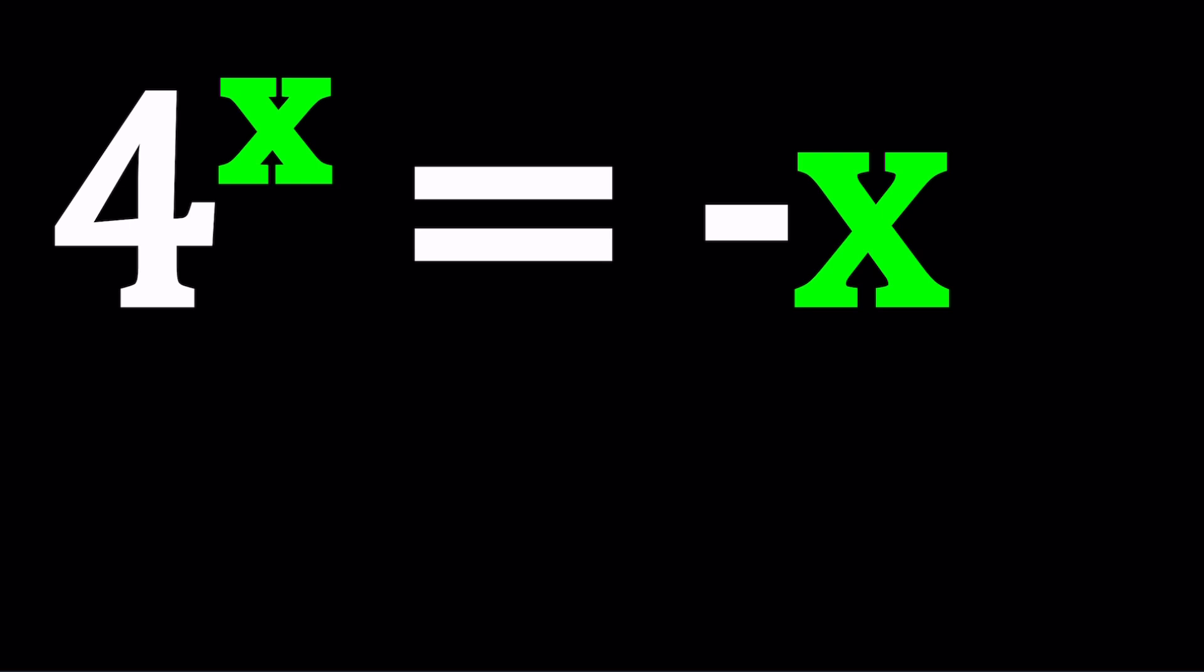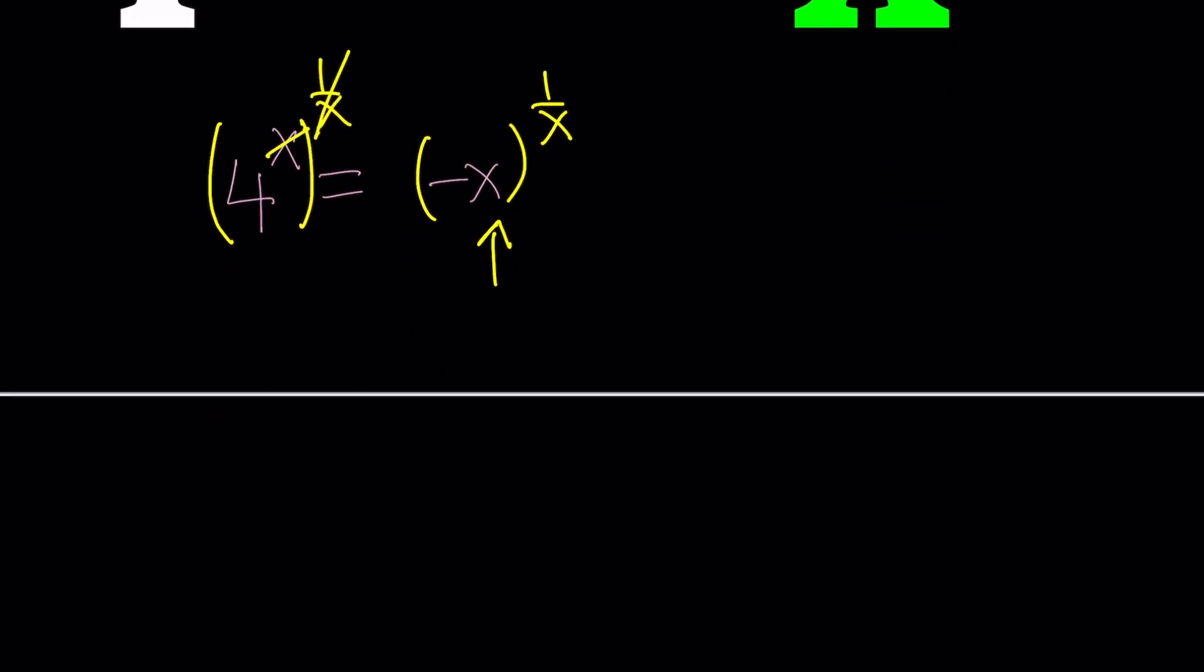Here's what I'm going to do. I'm going to go ahead and raise both sides to the power 1 over x. So I have 4 to the power x equals negative x, and I want to go ahead and raise both sides to the power 1 over x. That'll give me x times 1 over x is equal to 1, so that's going to cancel out. And we're going to get negative x to the power 1 over x equals 4.